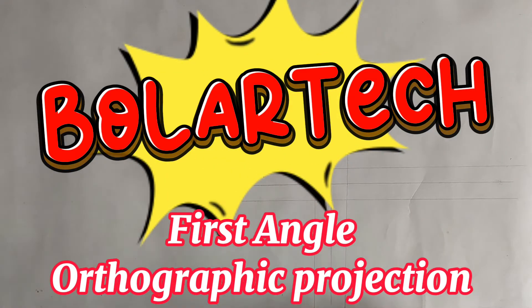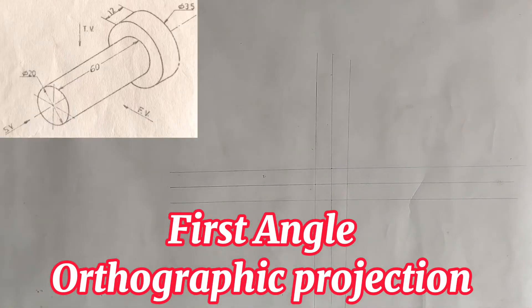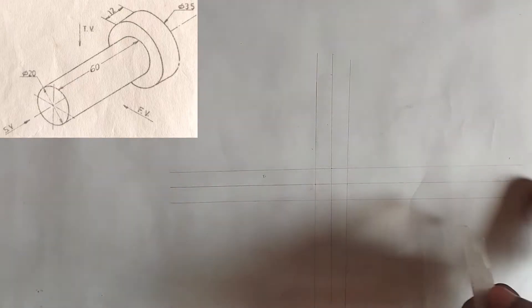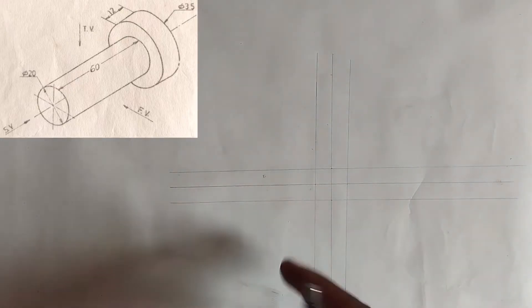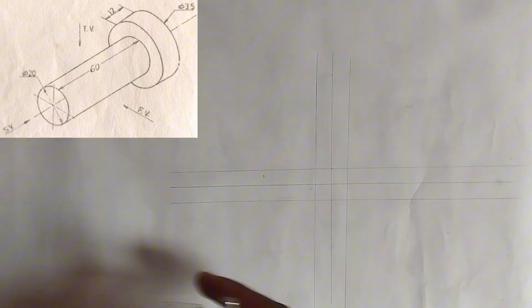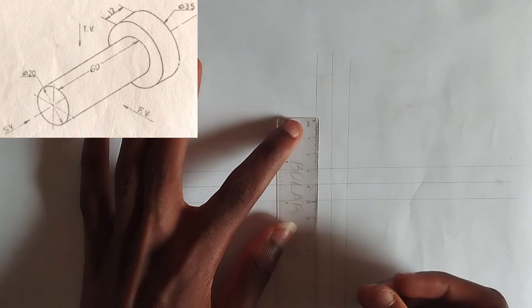I'm going to be drawing the first angle orthographic projection of the block on the screen. We have drawn our borders, which is our vertical and horizontal line, with one centimeter border each on the right and left hand side of them. First of all, we'll pick our ruler.